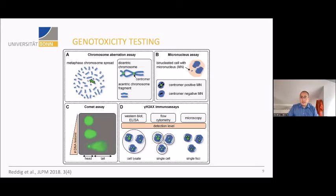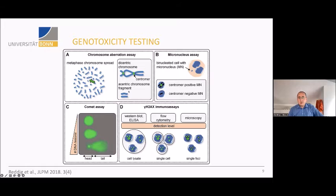We do not assess carcinogenicity ourselves, but we look at DNA damage effects using various genotoxicity testing methods. The chromosome aberration assay and the micronucleus assay, which we use extensively, assess chromosomal damage at the chromosomal level where structural malformations can occur, including whole chromosome loss leading to aneuploidy. The comet assay assesses DNA damage at the DNA strand level — typically single-strand or double-strand breaks. There are also other tests such as gamma-H2AX as a response to DNA damage, and the Ames test for base mutations.